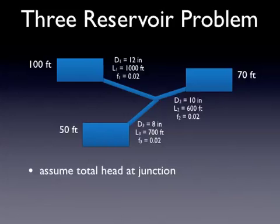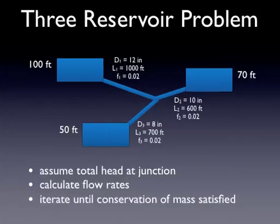In this method, we assume a total head at the junction. And then once we know the total head at the junction, we can calculate the flow rate in each of the three pipes. And then we can check conservation of mass. We know at that junction all the flow coming in has to equal all the flow going out. And if that's not true, then our assumption is wrong. We've got to go back and iterate.